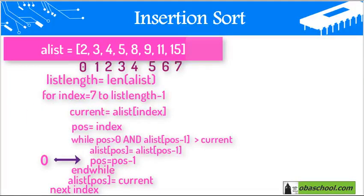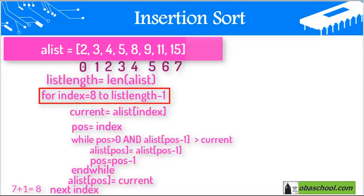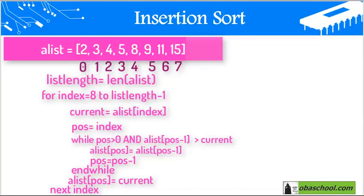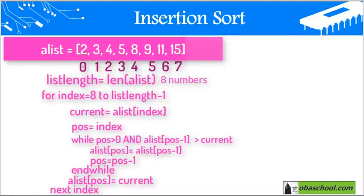Now we move to the next index in the outer loop. We add 1 to the index, so it becomes 8. The outer loop condition is: index from 8 to list length minus 1. The list length is 8 numbers, so list length minus 1 is 8 minus 1 equals 7. Since the index 8 is greater than 7, we exit the outer loop.